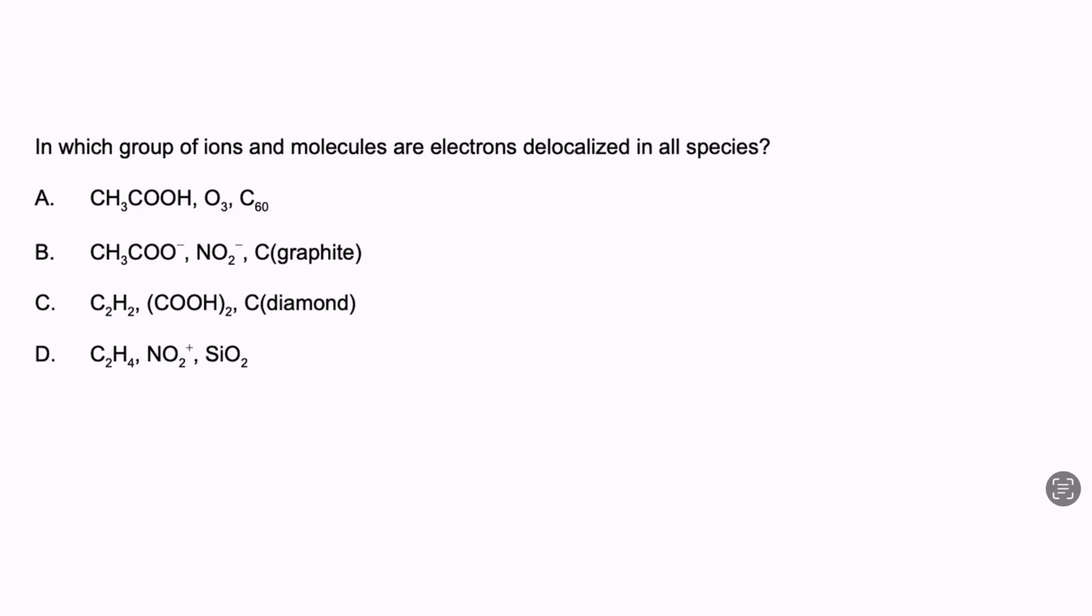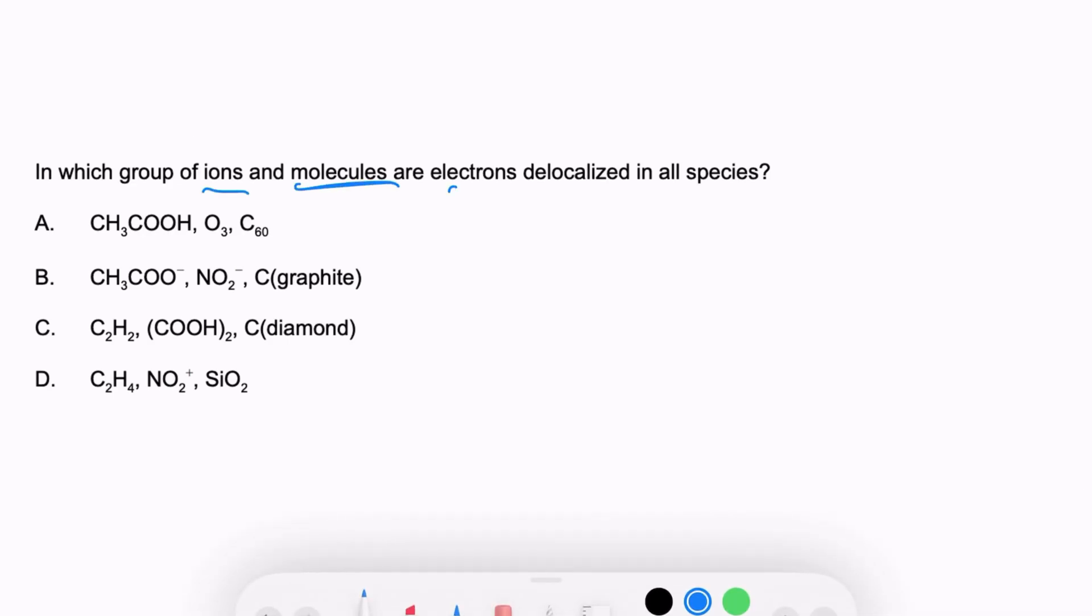The next question says, in which group of ions and molecules are electrons delocalized in all species? Remember, delocalized electrons are free to move around, they're not attached to one particular atom. Usually that happens when there is an extra electron. When there's an extra electron, we would see a negative sign. So this already sparks my interest because we have two negative signs here. But let's make sure our other answers do not have delocalized electrons.